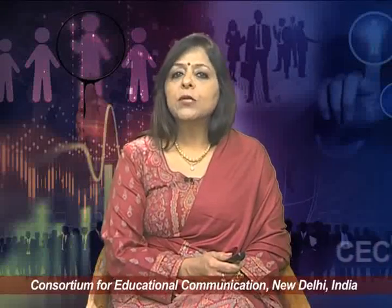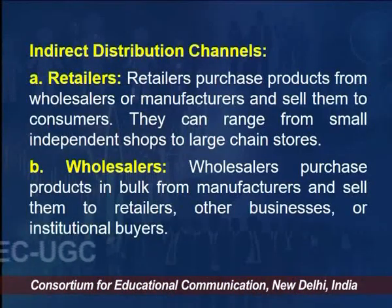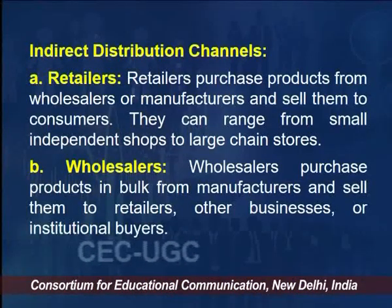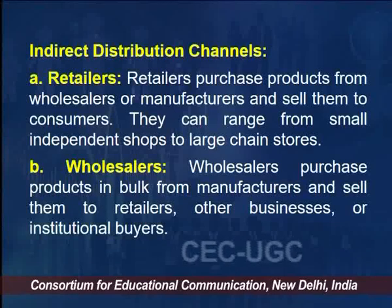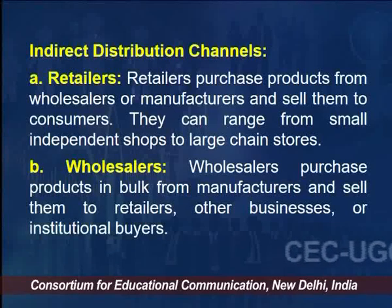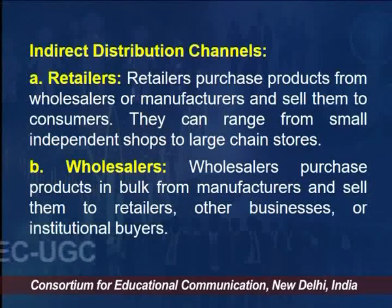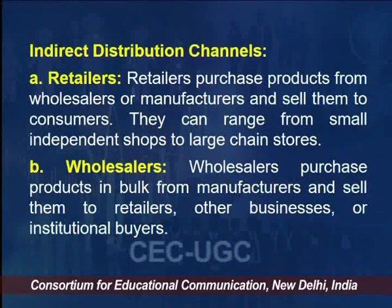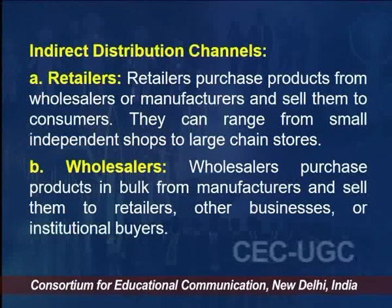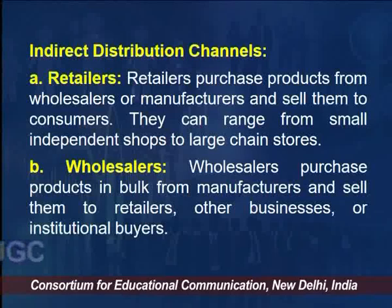In indirect channel distributions, we have retailers and wholesalers. Retailers purchase products from wholesalers or manufacturers and sell them to consumers. They can range from small independent shops to large chain stores. Wholesalers purchase goods in bulk from the manufacturer and sell them to retailers, other businesses, or institutional buyers.